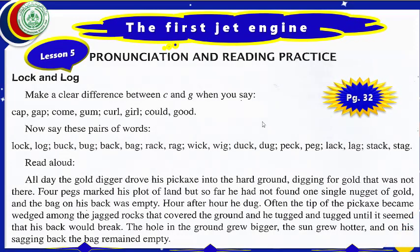In this next exercise: pronunciation and reading practice. Make a clear difference between C and G when you speak. I shall read the words — try to understand the sounds of K and G. Cap/gap — cap starts with K, gap starts with G. Gum/cum, curl/girl, could/good. C and G have different sounds. Now say these pairs: lock/log, duck/bug, back/bag, rack/rag, wick/wig, duck/dug, peck/peg, lack/lag, stack/stag.